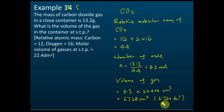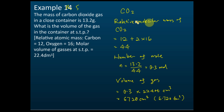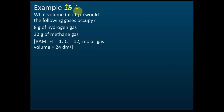The answer is 6720 cm³, or 6.72 dm³. You need to find the number of moles first, and to do that you need to know the molar mass. The molar mass equals the relative molecular mass, so you must find the relative molecular mass first, then the number of moles, and then the volume of the gas.